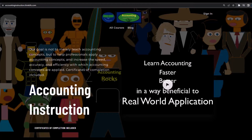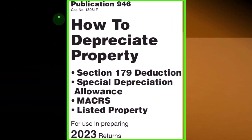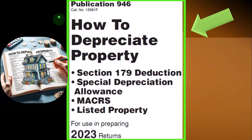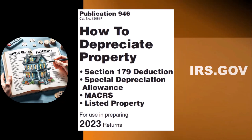If you would like a commercial-free experience, consider subscribing to our website at accountinginstruction.com or accountinginstruction.thinkific.com. Most of this information can be found in Publication 946, How to Depreciate Property — Section 179 Deduction, Special Depreciation Allowance, MACRS, Listed Property, and more, Tax Year 2023, which you can find on the IRS website at irs.gov.